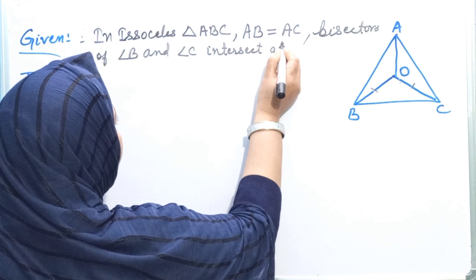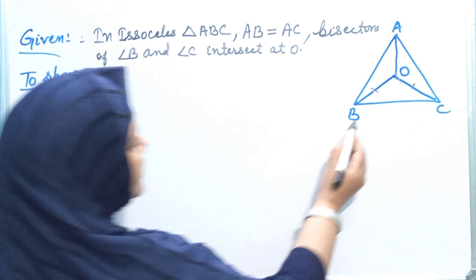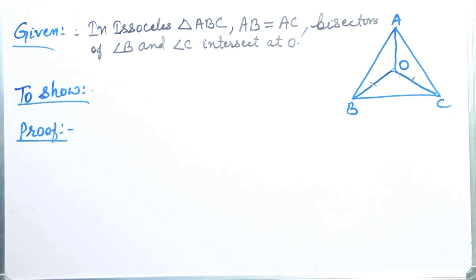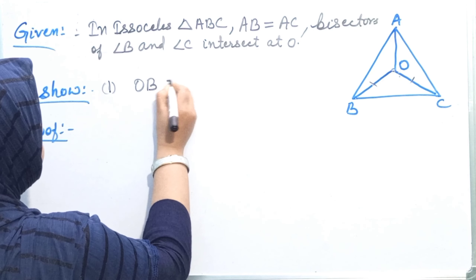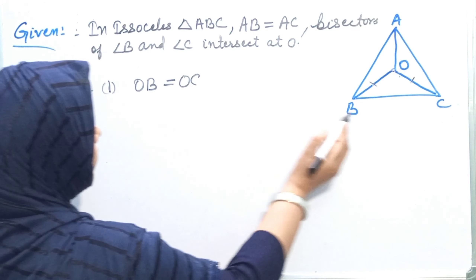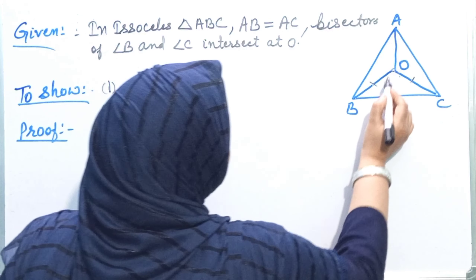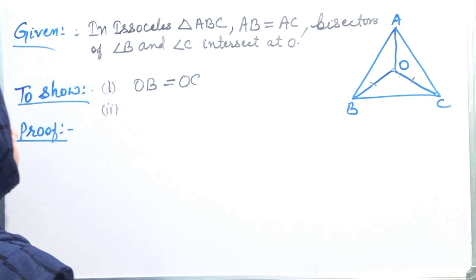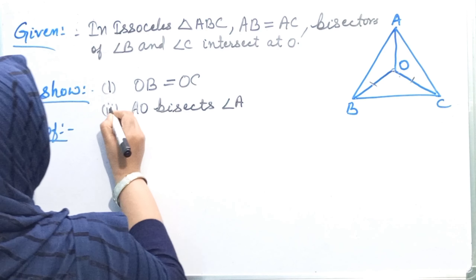So we have to prove two parts. First, we will prove that OB equals to OC. Second, we will prove that AO bisects angle A. We will prove both of these.